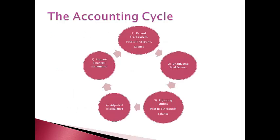The accounting cycle occurs throughout each period and is completed at the end of each period by preparing financial statements. The cycle begins at the top with recording transactions that occur during the period, posting these transactions into T-accounts, and balancing each account. A summary of all accounts and balances, called an unadjusted trial balance, is then prepared.